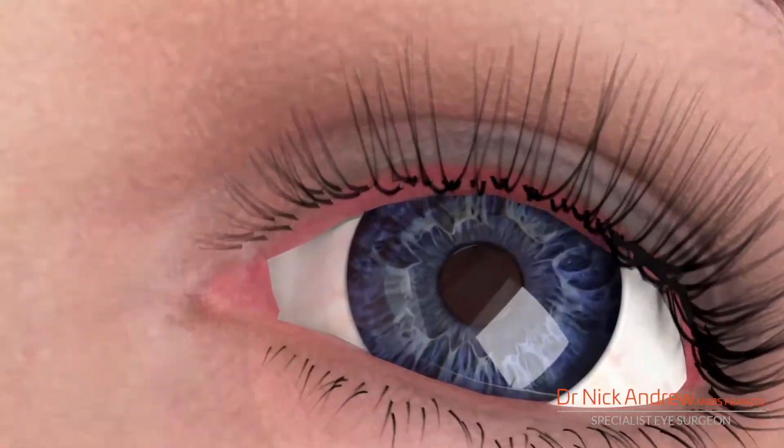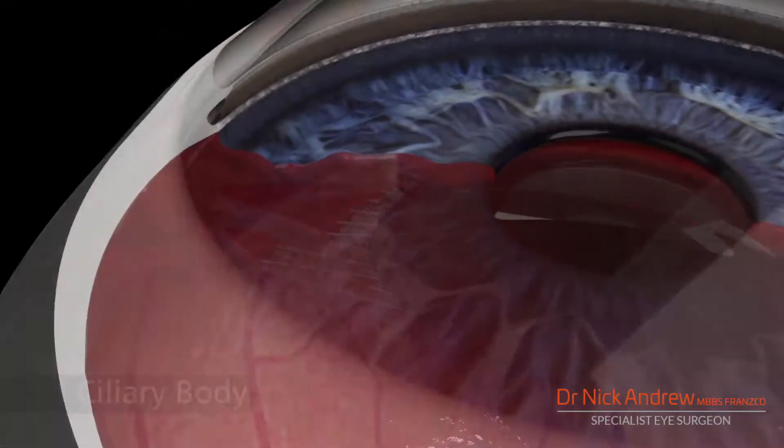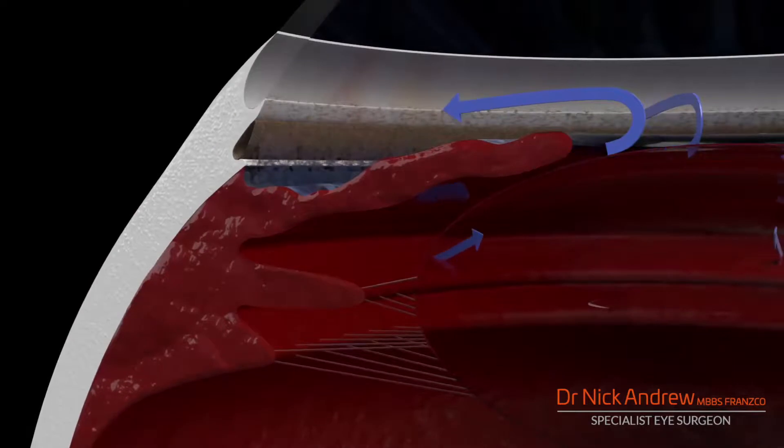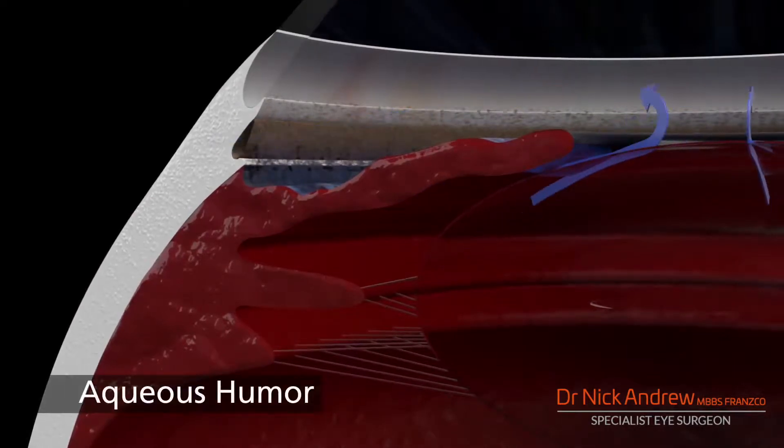Inside your eye, there's a darkly colored, highly vascular structure just behind the iris, called the ciliary body. This produces a clear, watery fluid called aqueous humor.